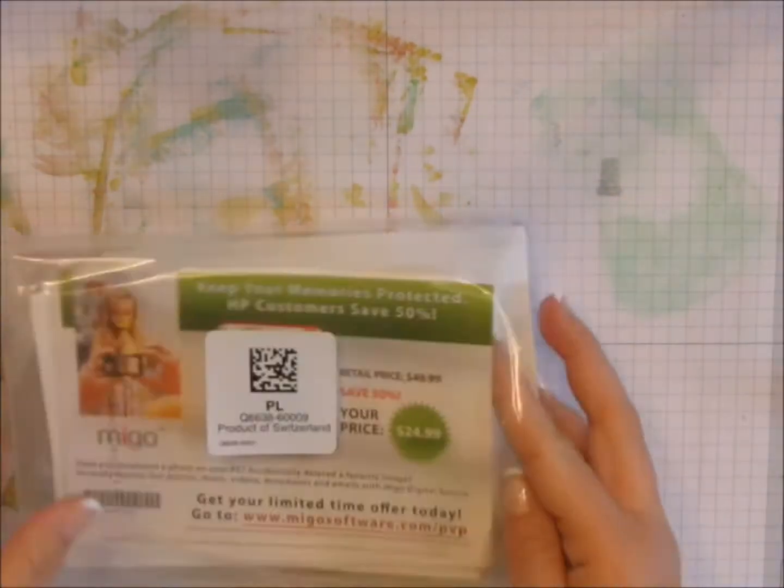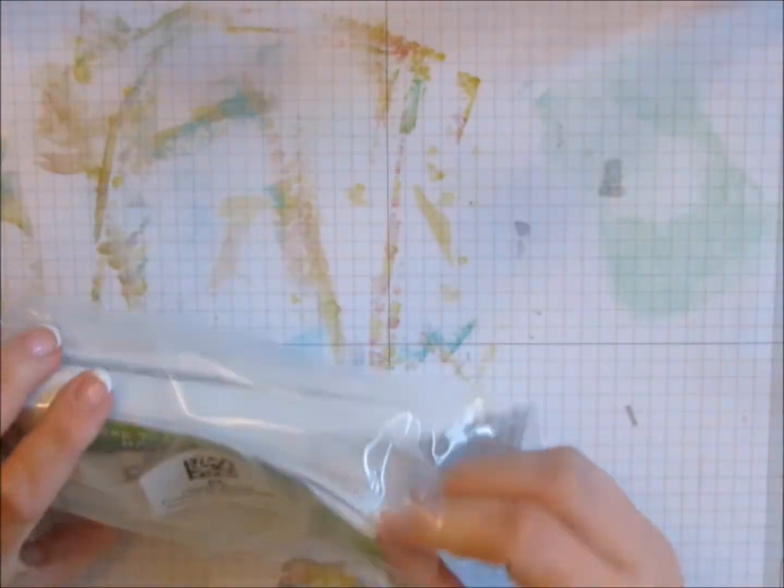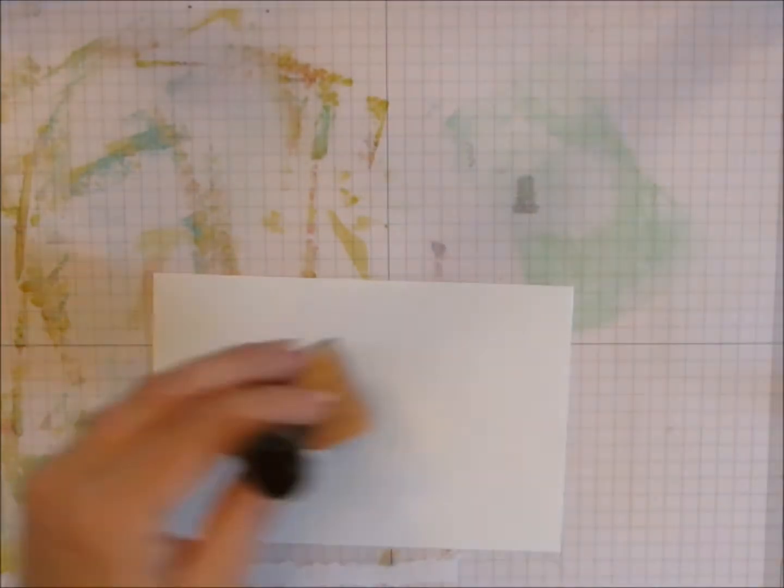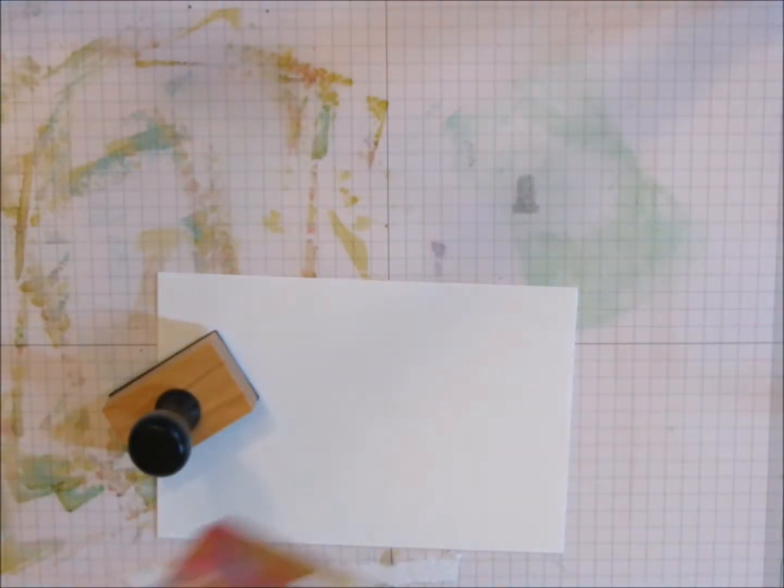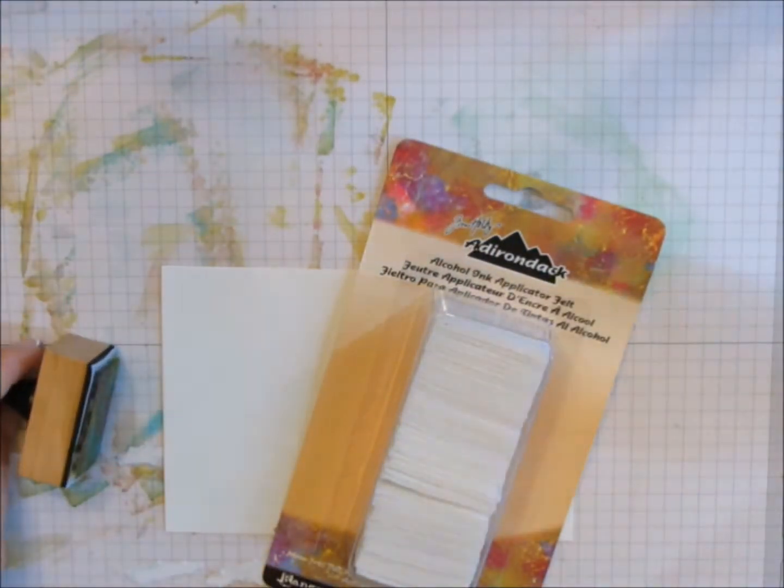The first thing you're going to want to do when working with alcohol inks is to protect your work surface. So I just have a piece of plastic template found in the quilting aisle, and then I have some photo paper. You could just use glossy paper, but every time I buy ink for my printer, I get these huge packs with hundreds of sheets of photo paper. So I'm going to use that.